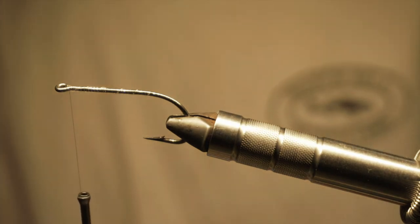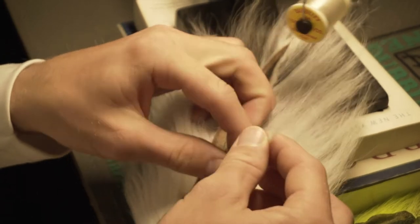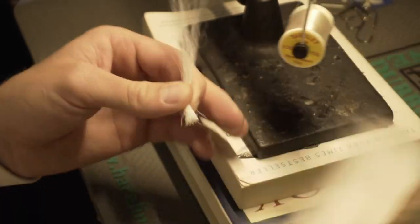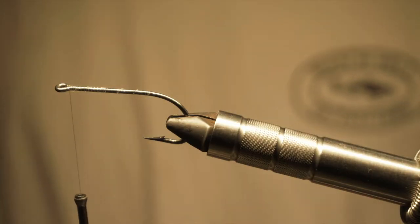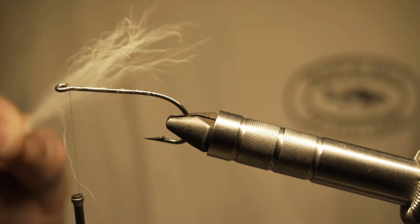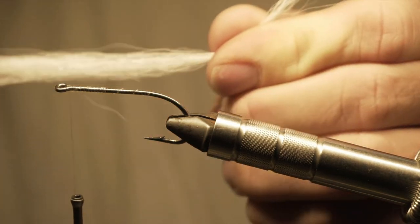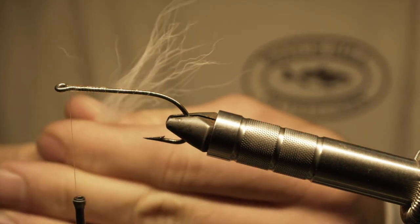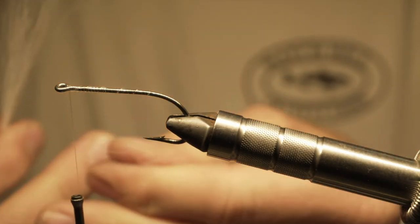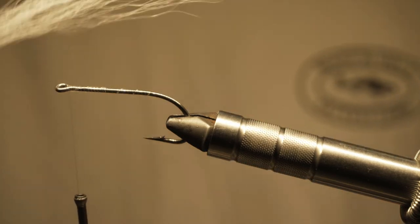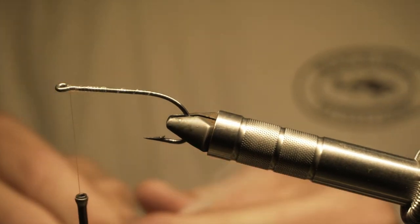We'll start with the white bucktail, grabbing maybe 40 fibers. I keep these pretty sparse because they're imitating a sand eel or anchovy. When you start out with bucktail, they're typically pretty unorganized. I trim out shorter fibers and line up the longer pieces. You don't want to line them up too much because you still want to maintain a nice taper.